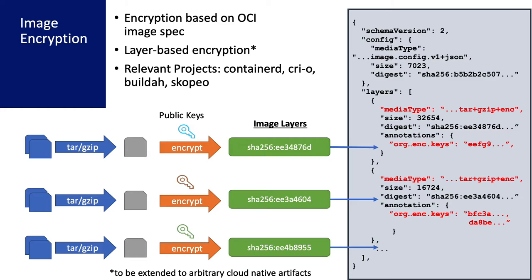Next up, we have image encryption, which is based on the OCI image spec. Here we have the OCI image manifest. What we want is to be able to protect the content of the image. We take the layers of an image — which traditionally are just tarballs or files representing the layers — and go through an additional step of encrypting these layers with a key. The image layer blobs are now encrypted, and they can only be decrypted if the appropriate key is present during runtime. This way, even if the registry is compromised after the image is built, the image remains encrypted. Relevant projects for this include the containerd runtime, the CRI-O runtime, and for encrypting images, Builder and Skopeo.